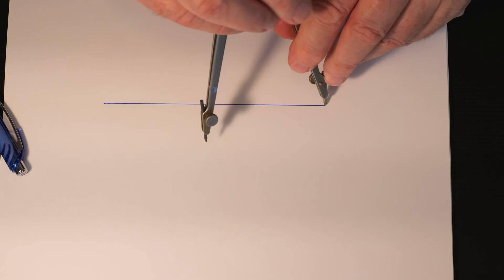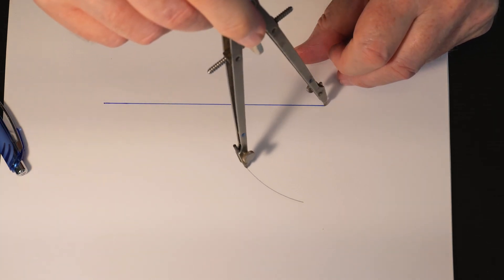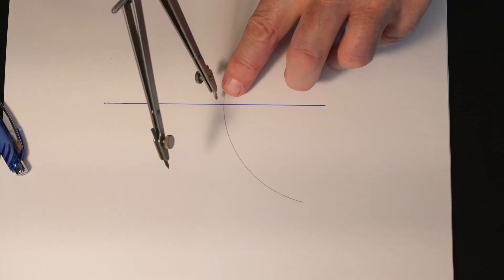Here's how you do it with a compass. Take your compass and set it at the point on one end of the line, and then you're going to draw an arc across the original line.